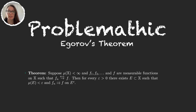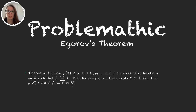Egorov's theorem is a beautiful and very important theorem in measure theory and real analysis. Basically what it says is that in finite measure spaces, almost everywhere convergence is very similar to uniform convergence. Because if we have a sequence in a finite measure space that converges almost everywhere to a function f, then we won't have uniform convergence but we will on a very large set.